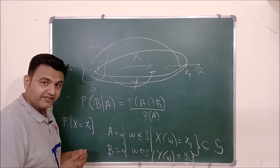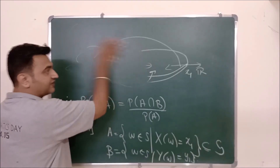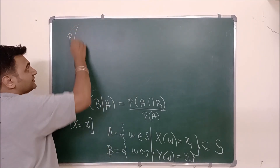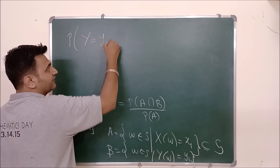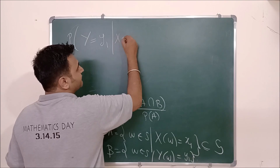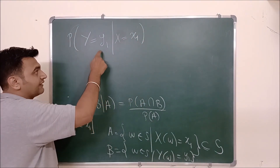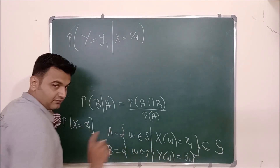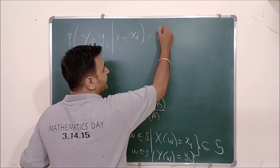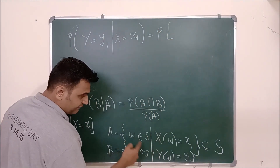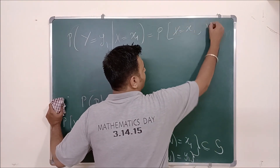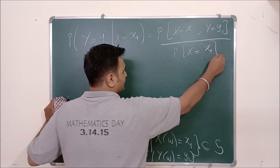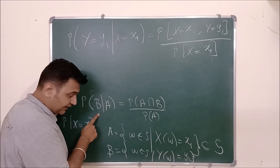With these events A and B, we can talk about conditional probability. Probability of B given A means: the probability that Y takes value y₁ given that X takes value x₁. By the conditional probability definition, this equals probability of A intersection B — meaning X takes x₁ AND Y takes y₁ — divided by probability of A, meaning X takes x₁.